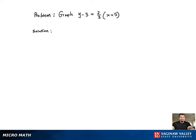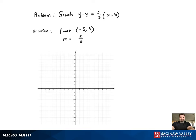Since the equation is already in point-slope form, we can already recognize that there's a point, negative 5, 3, and that the slope is 2 thirds. Now with those two pieces of information, we're good to graph.